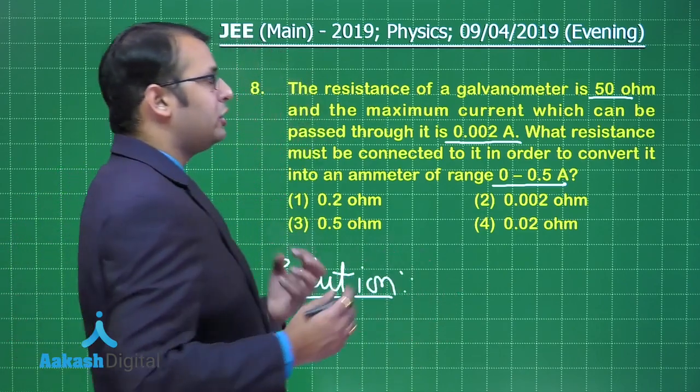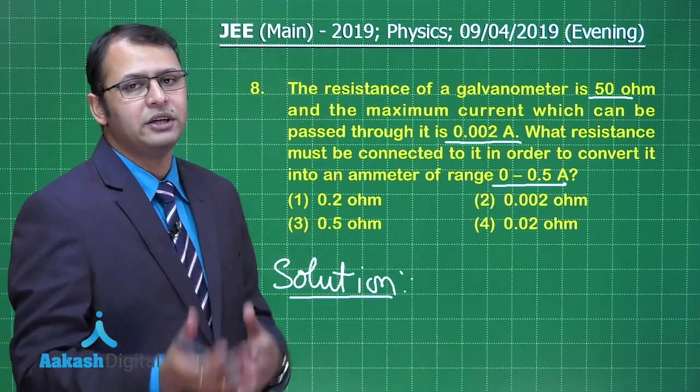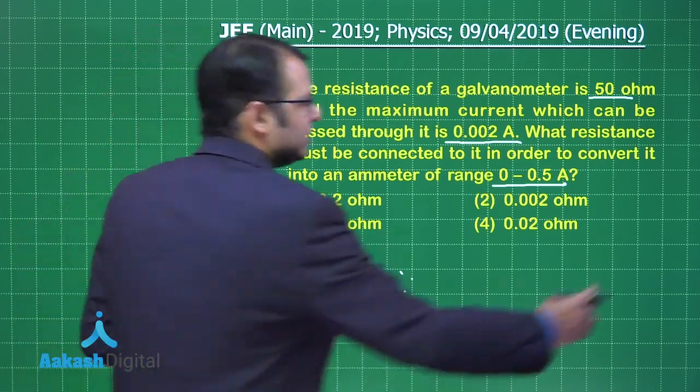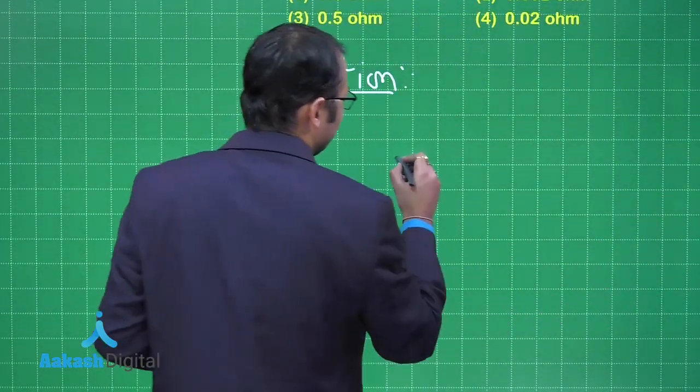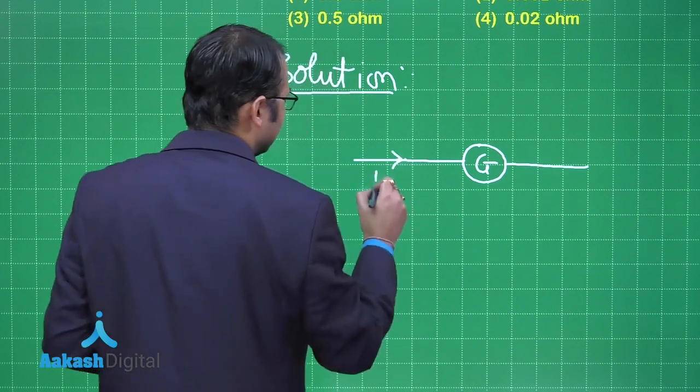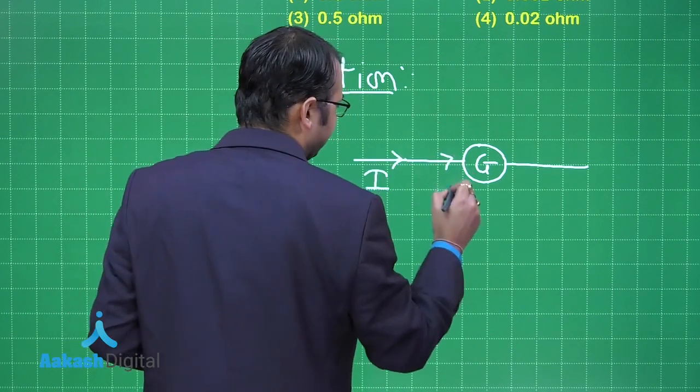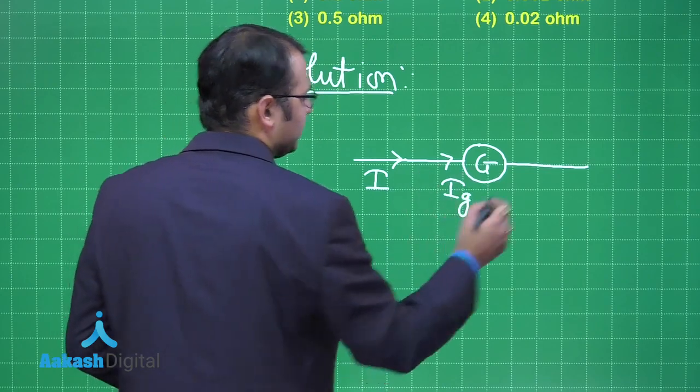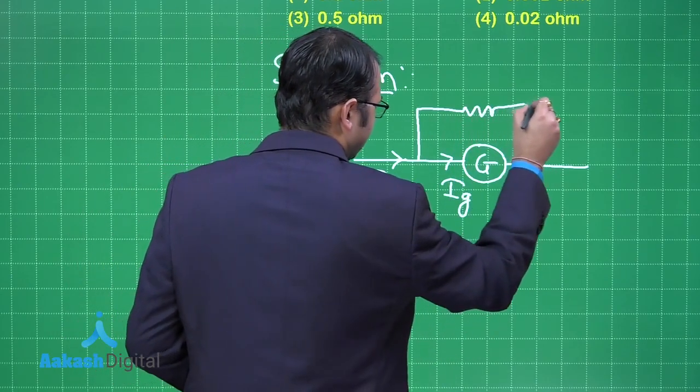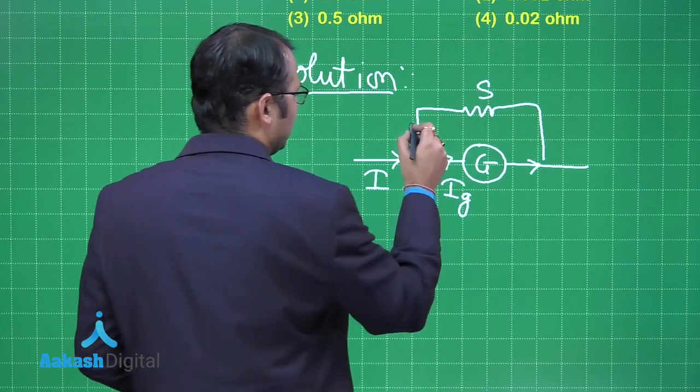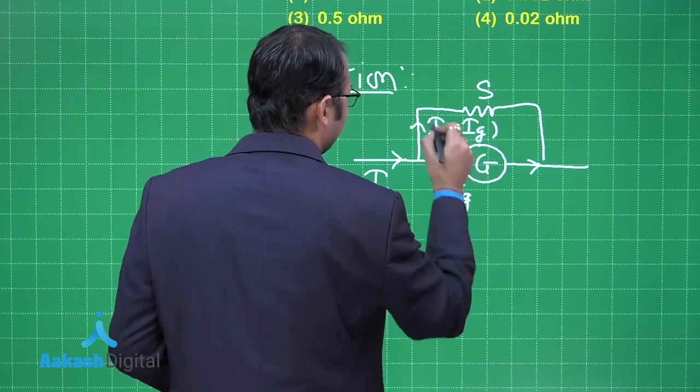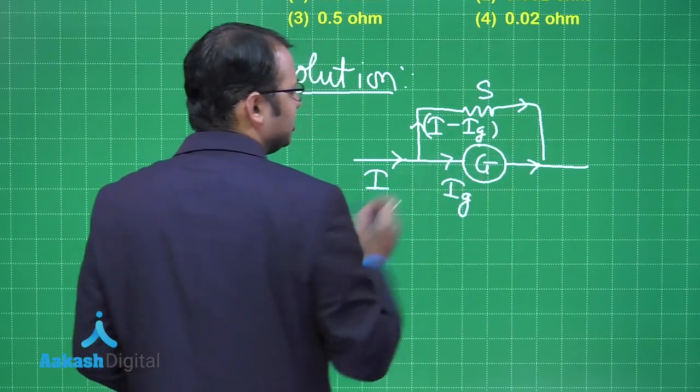You all are aware that in order to convert a galvanometer into ammeter, you have to add a shunt parallel to the galvanometer. In that case, let's see if this is the galvanometer. So the main current in the circuit would be I. I can pass only ig which can be passed through here, so I will create an alternate path, that is shunt for this case. Let's take this resistance as S. So what current will pass through here is I minus ig.